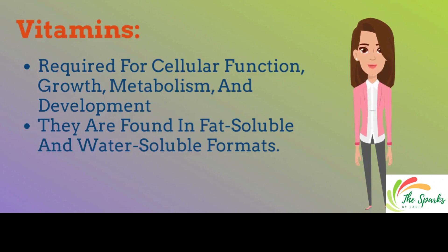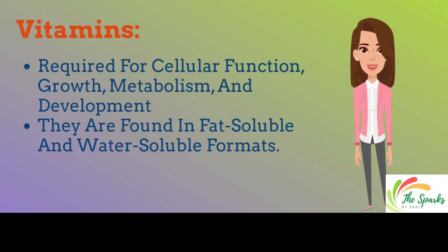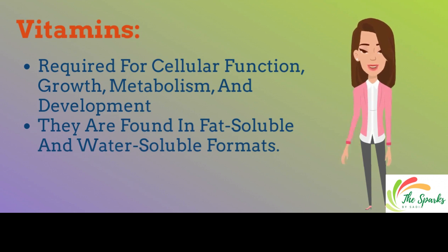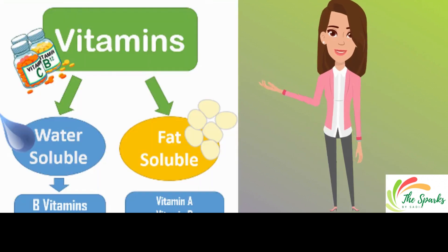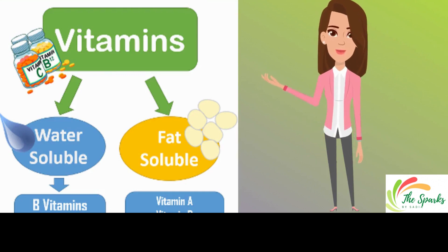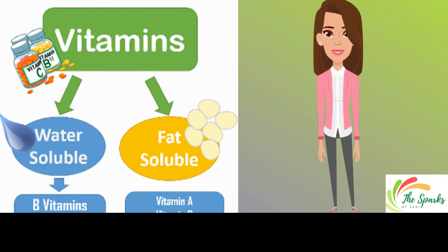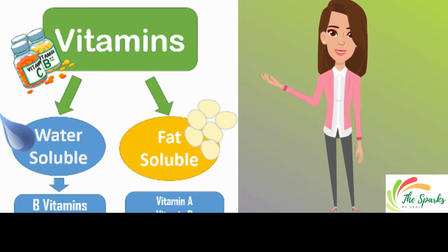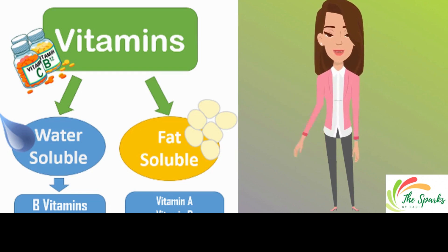The first micronutrient is vitamins. Vitamins are required for cellular function, growth, metabolism, and development, and are found in fat-soluble and water-soluble formats. Vitamins are divided into two groups: fat-soluble and water-soluble. Water-soluble vitamins dissolve in water and include vitamins B and C. In contrast, fat-soluble vitamins dissolve in fat. Vitamins A, D, E, and K are fat-soluble vitamins.